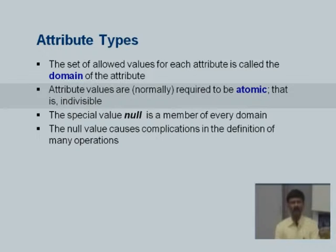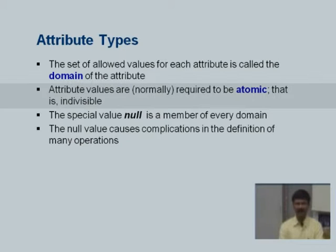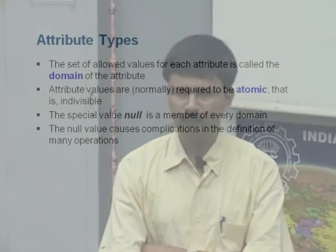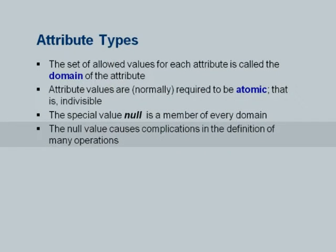There is also a special value called null, which we will be seeing repeatedly. It is used to represent the fact that a particular attribute value is either missing — that is, it just does not exist — or we do not know what it is. For example, if we do not know the salary of an instructor, we could set it to null. If we do not know the department of an instructor, we could set it to null. It is possible that we have an unpaid instructor and there really is not a salary — it should have been 0, but we do not know, so we set it to null. Null values cause complications in the definition of operations in SQL and relational algebra. For the moment, we will not worry too much about null.